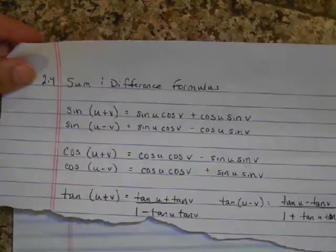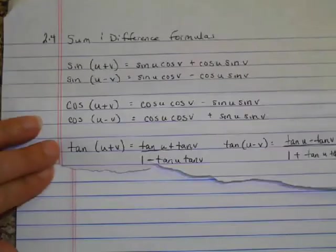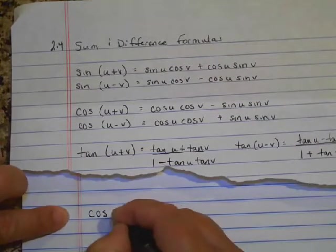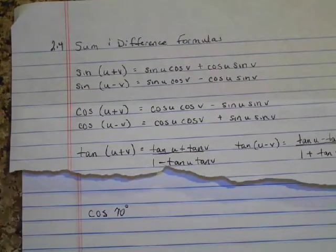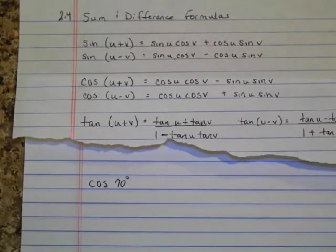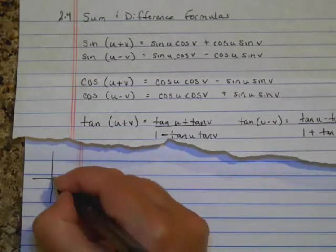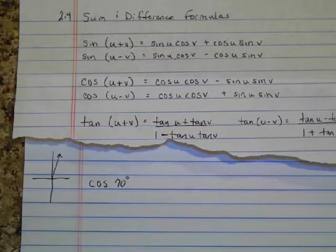We're going to start with the first problem. Let's see here if I can get this set up. So we are going to evaluate cosine of 70 degrees. Now, if you notice, cosine of 70 degrees, if you look at your unit circle, it's not on your unit circle. 70 degrees would be somewhere kind of like right in there.